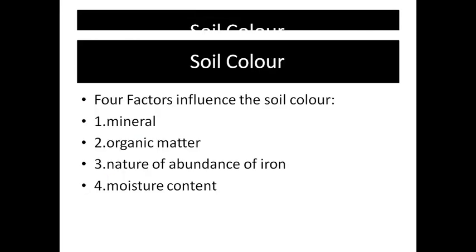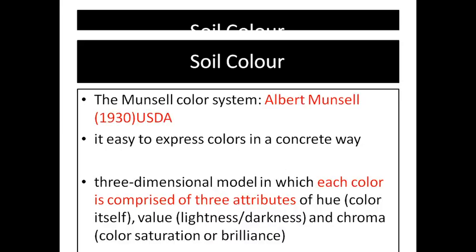Four factors influence the color of the soil. First is the mineral content of the soil. Second is the organic matter content of the soil. Third is the nature and abundance of iron. And the last one is the moisture content of the soil. Soil color is technically described by the Munsell soil chart.